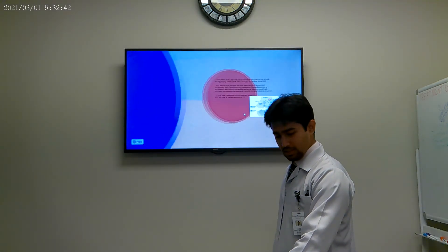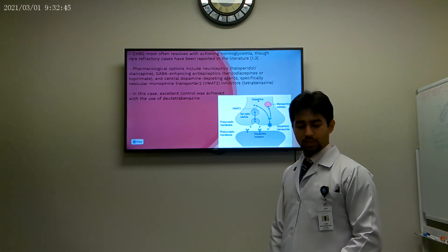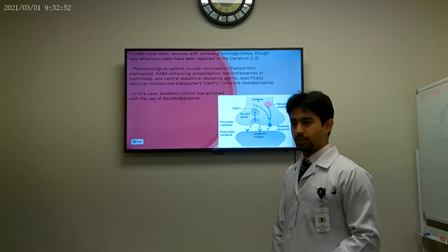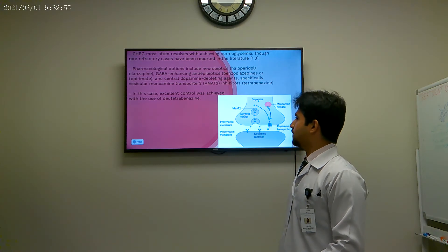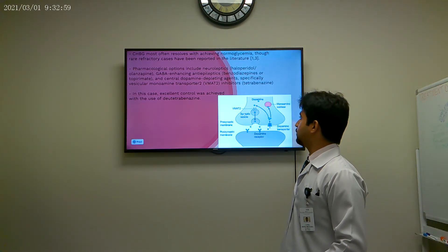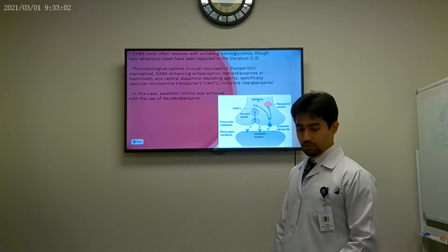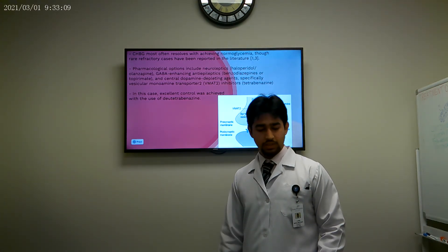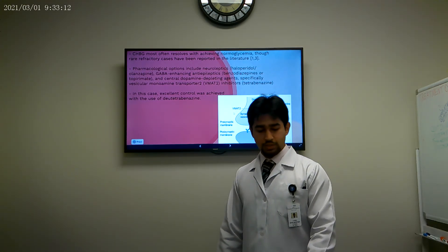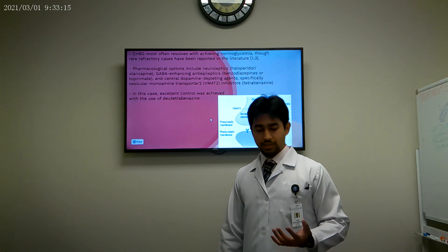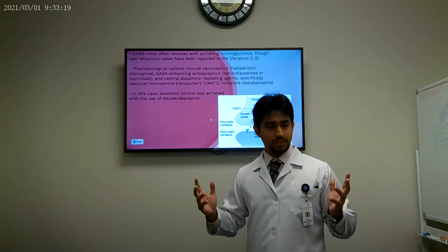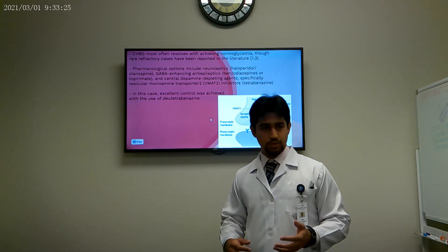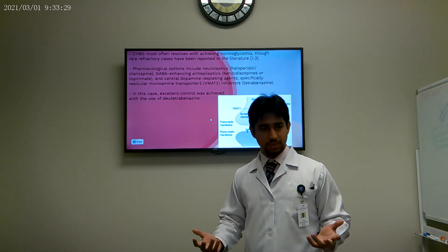The interesting thing about this case was that it was responsive to an agent that's not your first line agent for this syndrome. So when we get a patient with CHBG, our first line thing is to correct the hyperglycemia. That was done in this case. The second line management options would be your neuroleptics, including haloperidol, your dopamine-enhancing agents like benzodiazepines, and lastly you would try the VMAT inhibitors. So in this particular case, and the case report can be found online within the HMC website, the patient did not respond to any of the first two. She only responded to VMAT inhibitors, which basically affects the packaging and the release of dopamine, which again ties up to this entire complex neurological system, where dopamine is a big player and which can manifest as dystonia, as chorea, as parkinsonism, and which can have non-motor manifestations as well.